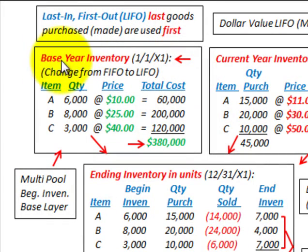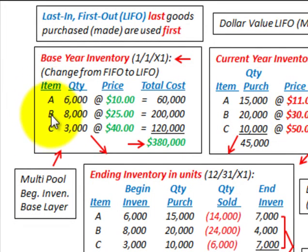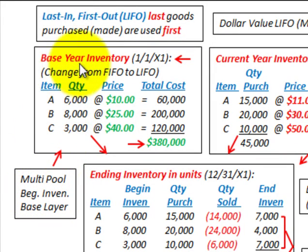Our example is going to be based on three items that we have for our inventory. We're going to establish separate inventory pools for items A, B, and C. We're going to have multiple inventory pools here, and this first amount represents our base year or beginning year inventory at 1/1/X1.